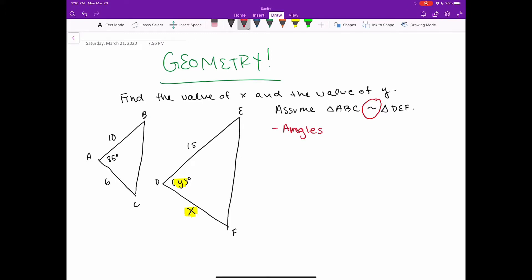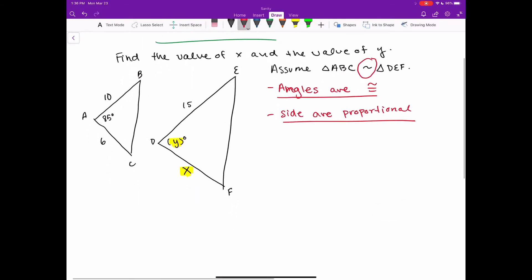They're equal in measure, all of our corresponding angles are congruent. And also you have sides in similar figures have to be proportional. There's some sort of ratio or scale factor, they're in a common proportion.